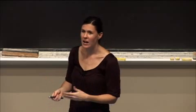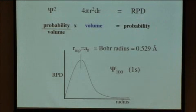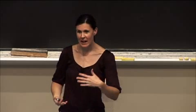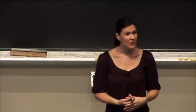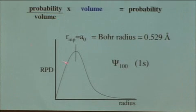Taking this volume term and multiplying it by probability over volume gives us the actual probability of finding our electron at that distance r from the nucleus. The example we took on Monday was the 1s orbital for a hydrogen atom. We can graph radial probability as a function of radius, and we see a curve with a maximum probability at a most probable radius r sub mp. For the 1s hydrogen atom, that falls at a₀ distance — the Bohr radius.